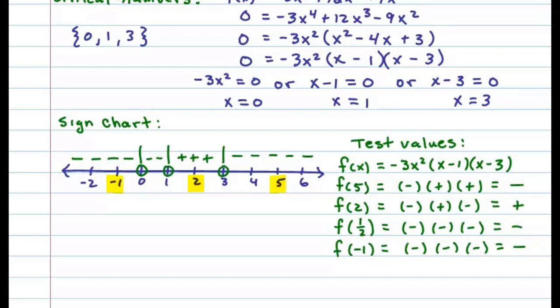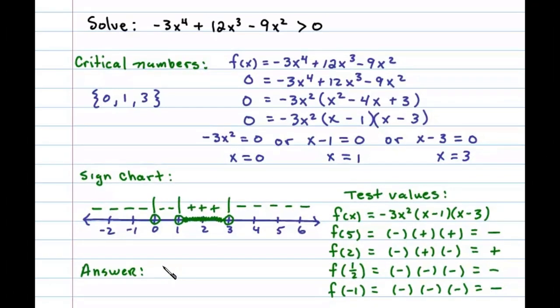In this case, we're asked to find the x values for which this polynomial is greater than 0, in other words where is it positive. From the sign chart we can see that the x values between 1 and 3 result in positive values, and so the answer is all the x values between 1 and 3.